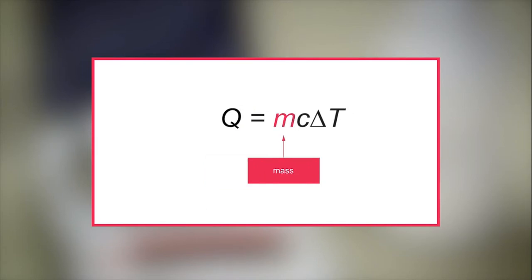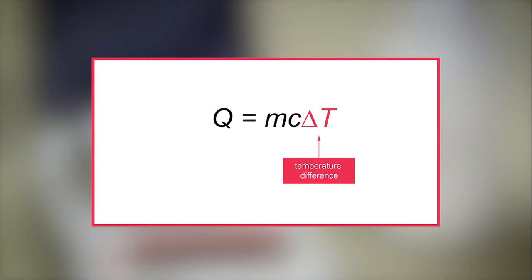M represents mass. The mass used for the calculation equals the volume of the acid added. Therefore, M is 20 grams. C represents the specific heat capacity. To simplify the calculations, we neglect the specific heat capacity of both the calorimeter and the reagents. The value used is the same as that for water, 4.18 joules per gram per kelvin. And finally, delta T is the difference between the initial and final temperatures.